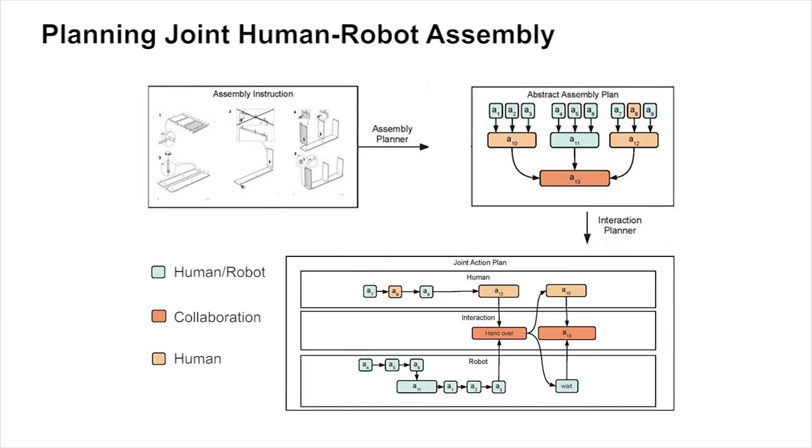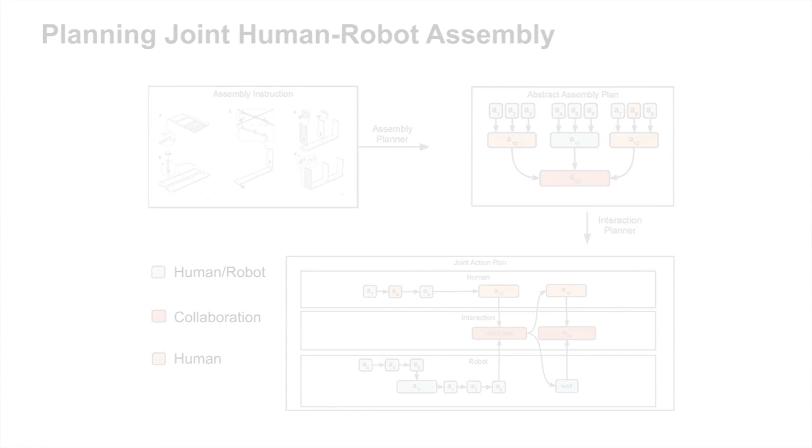It expresses the respective actions and interactions of humans and robots. It also takes into account each agent's capabilities and availabilities, optimizing for task-relevant criteria such as human safety or cycle time.